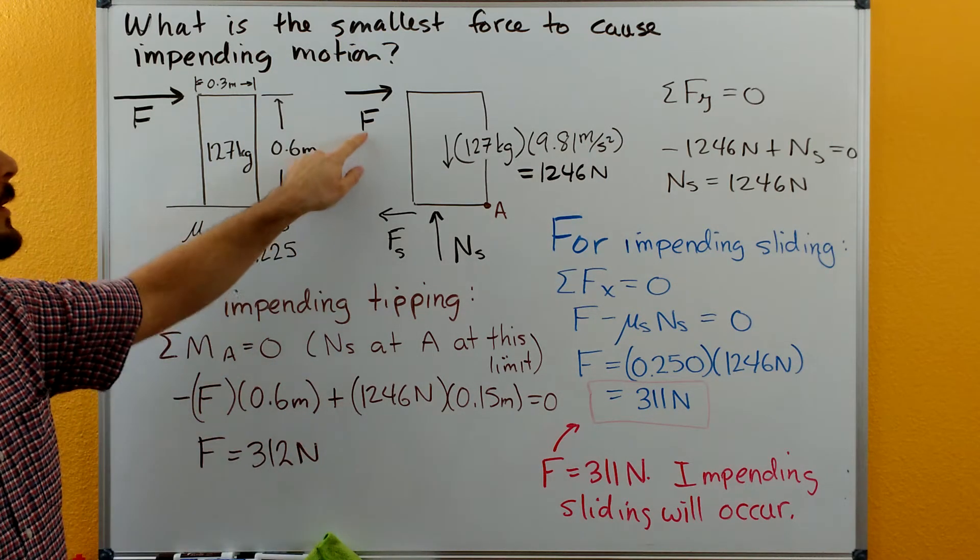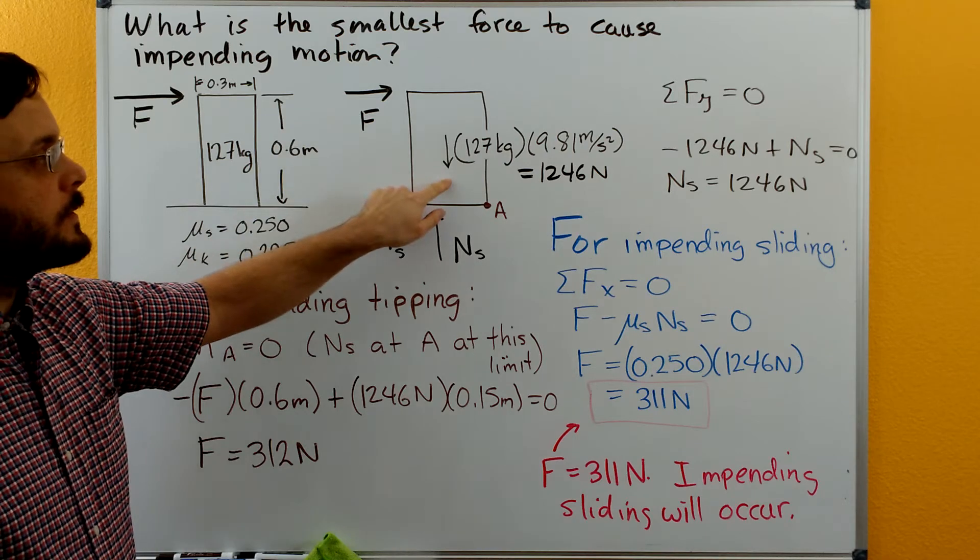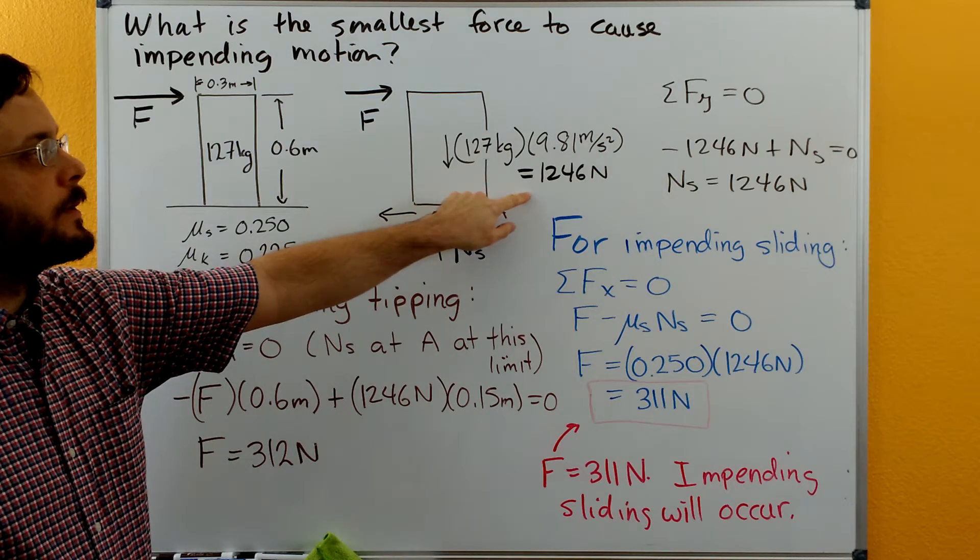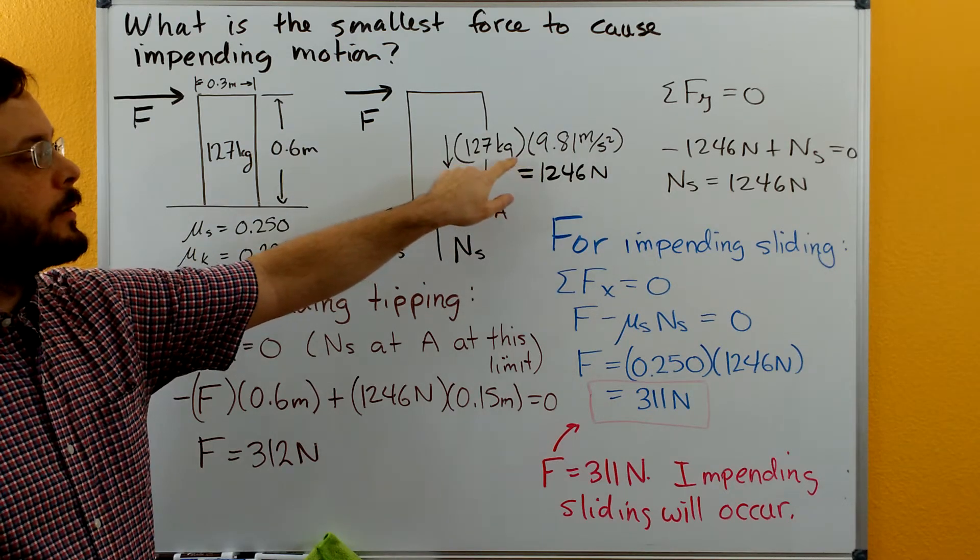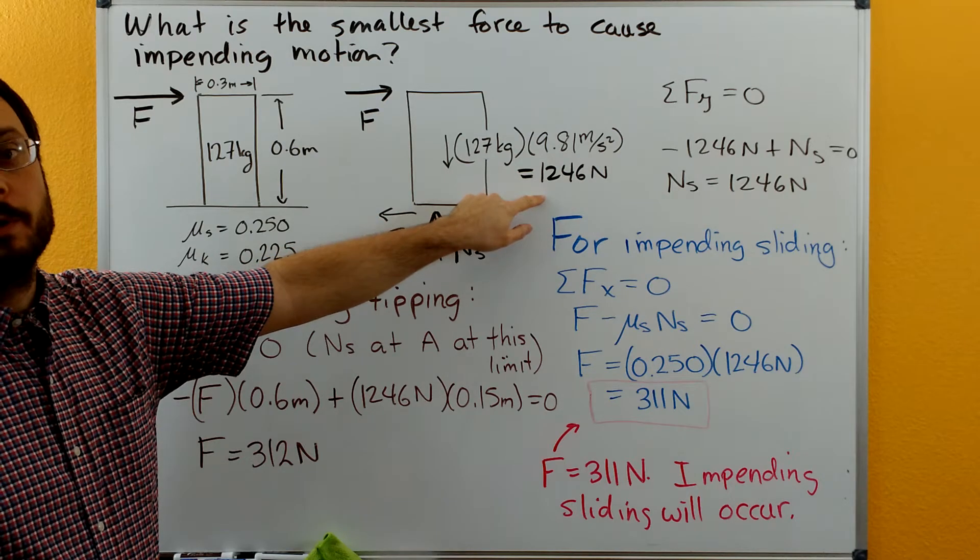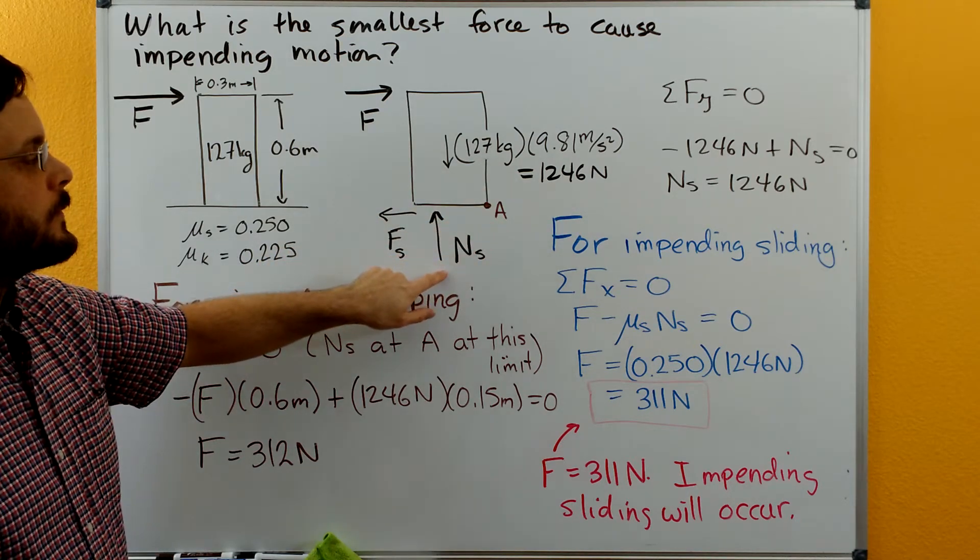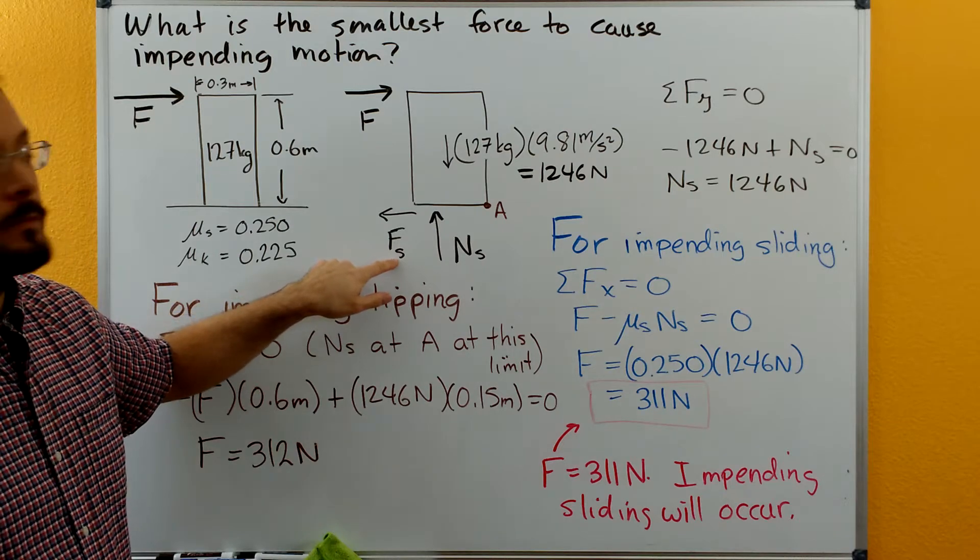Here's our free body diagram. We have our force F. We have the weight of the block. Make sure that you convert the 125 kilograms over to newtons by multiplying by 9.81. We have the normal force and then we have the frictional force.